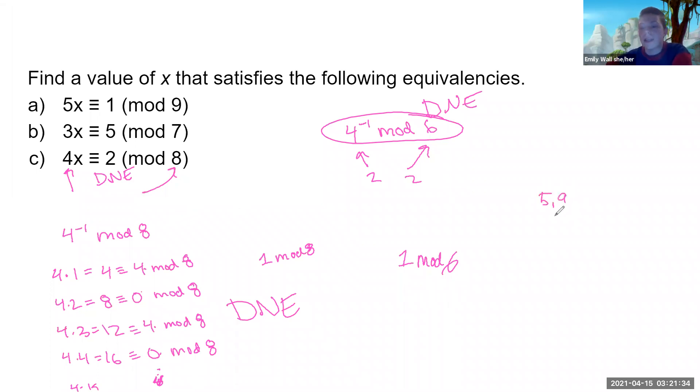But something like 5 and 9, they don't share any common divisors other than 1. So we can find an inverse there. Or 3 and 7, no common divisors other than 1. So also you can find an inverse for those. So that was why a and b worked, but c didn't.